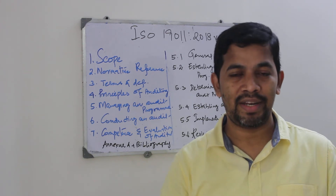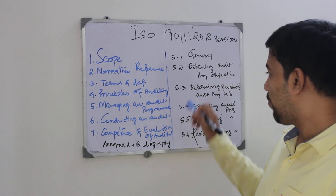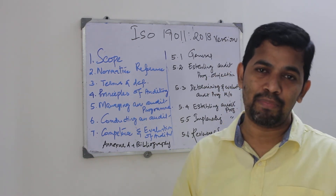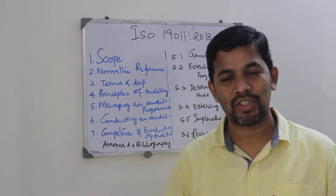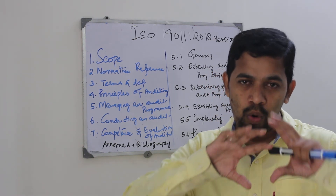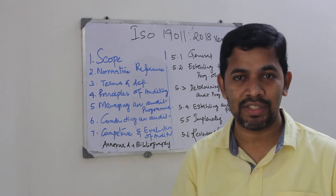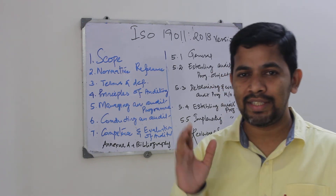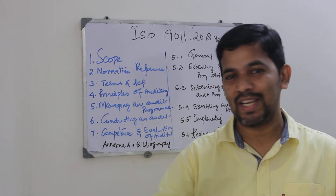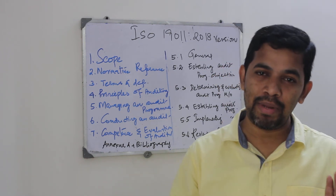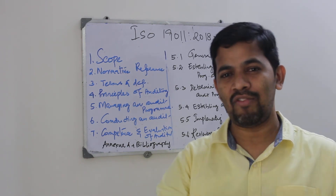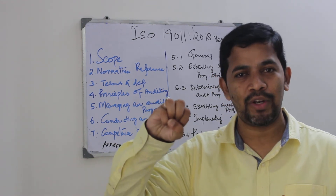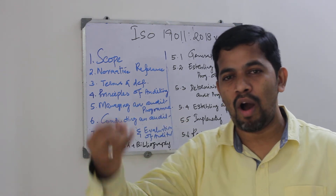The next one is clause 5.3: determining and evaluating audit program risk and opportunity. As I mentioned in my previous video, the whole audit program needs to be adjusted based on risk, based on customer complaints, and based on concern. For example, if function A has zero concern — 0 PPM — and function B has 100 PPM, for function A we can change the audit frequency from quarterly to half-yearly or from half-yearly to annually.